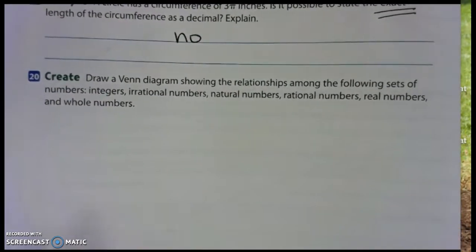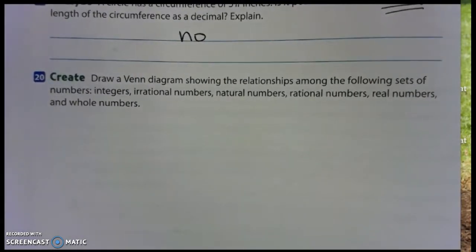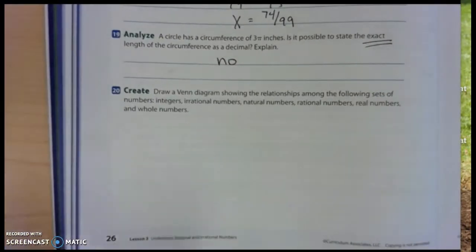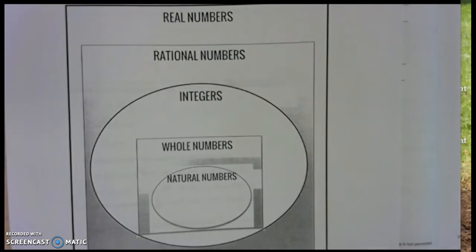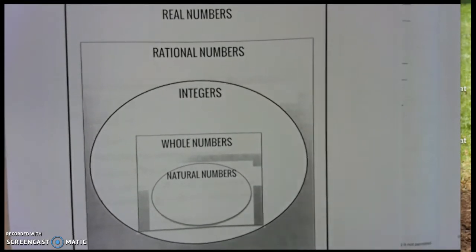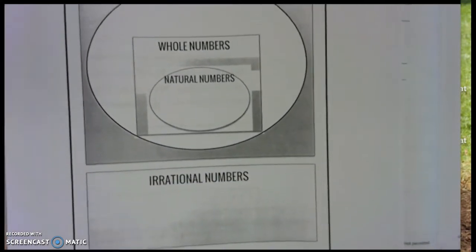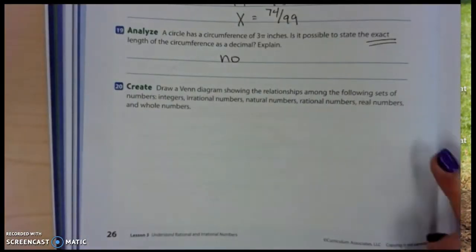Number 20. This one's easy. Draw a Venn diagram showing the relationship among the following sets of numbers. That was your homework last night. A Venn diagram was just what we made on our graphic organizer. It was circles, should be circles inside of each other, but I made it as circles and rectangles so you could see the difference. So if you want to see what this one would look like, it's in your notes on your graphic organizer.